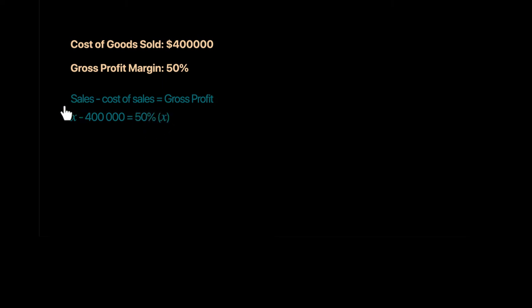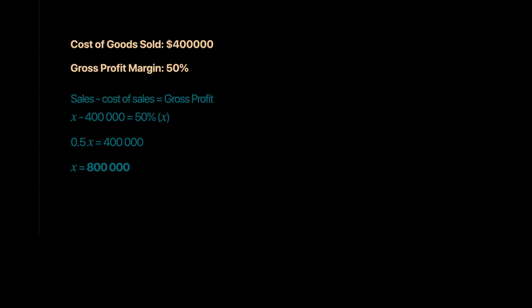So the equation becomes: X − 400,000 = 0.5X. Rearranging: X − 0.5X = 400,000, giving 0.5X = 400,000, so X = 800,000. Sales = 800,000.